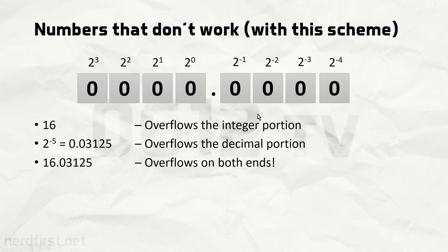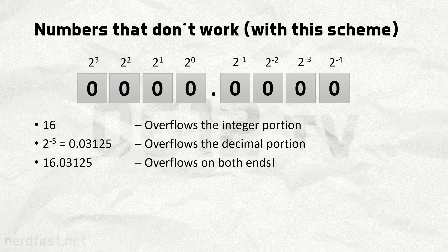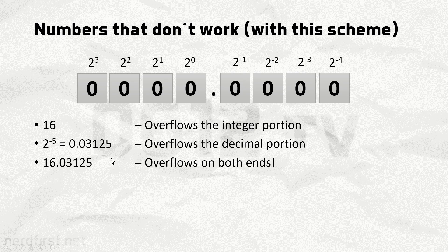These examples are simple ones for this particular fixed point representation. For all three of these problems, we could technically attempt to solve it by simply adding more bits — we have 8 bits total here, but if we had 16 then we'd have more numbers on each side. However, there is still a great inflexibility. For example, we wouldn't have a problem storing a value if we were able to shift the decimal point somewhere else. But these are fixed point numbers, and that doesn't happen.